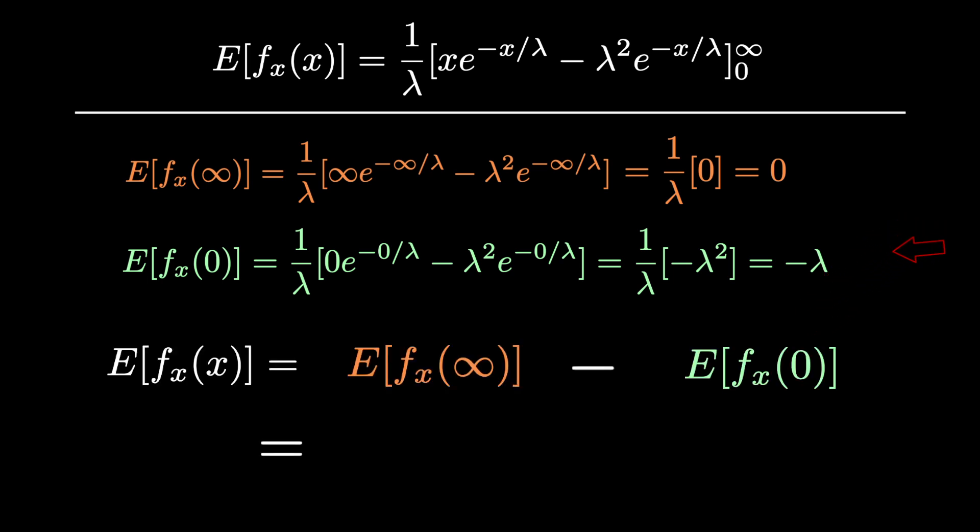All that's left now is to plug in our value we got for infinity, which is 0, and subtract that from our value that we got at 0, which is negative lambda. This makes our final answer 0 minus negative lambda equals lambda.